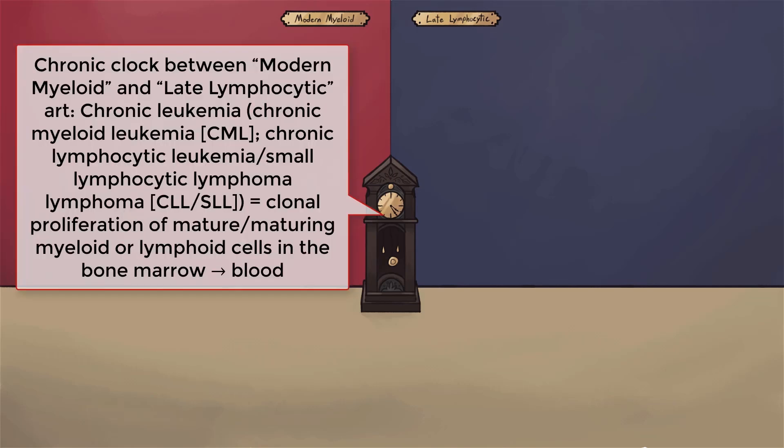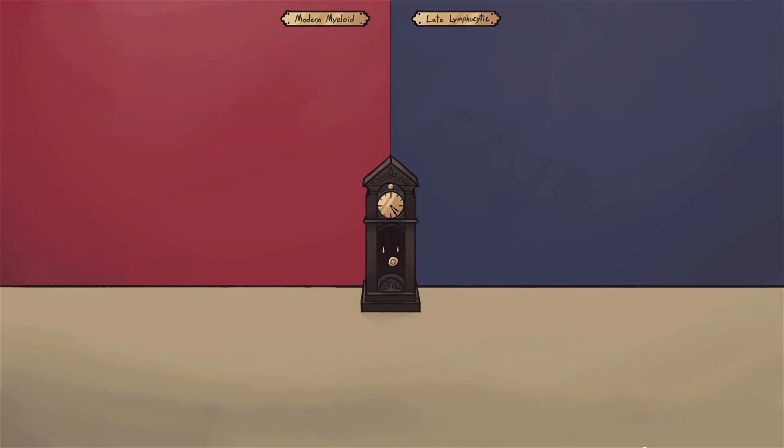Compared to the acute leukemias, chronic leukemias may present with a more insidious onset and may be asymptomatic at diagnosis. In the center of this sketch, we've included our recurring symbol for chronic disease: an old grandfather clock.